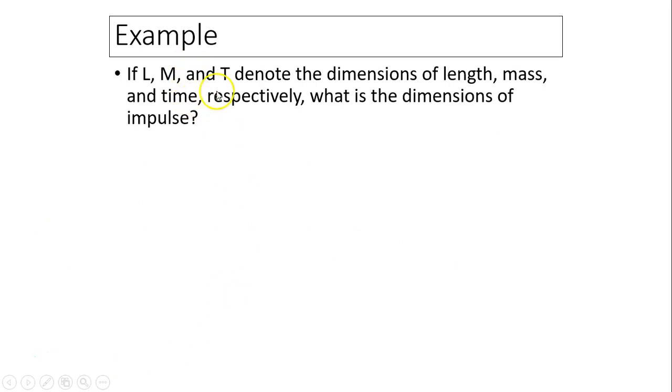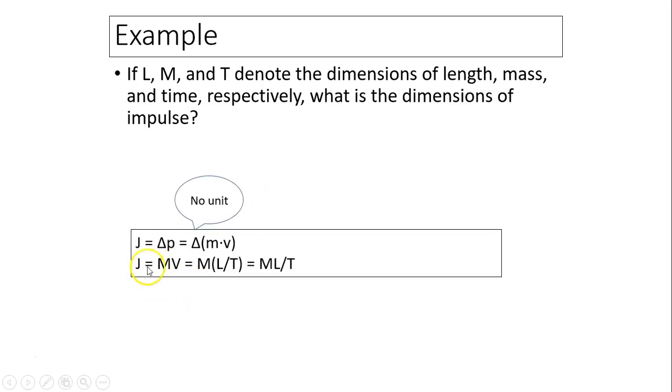For example, if L, M, and T denote dimensions of length, mass, and time respectively, what is the dimension of impulse? How do we determine that? We look at the definition of impulse. Impulse is change of momentum. Now this change has no unit, so impulse and momentum have the same unit or same dimensions. Momentum's dimension is mass times velocity, which is M for mass. V is length over time. So the dimension for impulse, which is the same as momentum, is mass times length over time.